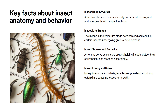Adult insects have three main body parts: head, thorax, and abdomen. The nymph is the immature stage between egg and adult in some insects. Antennae help insects sense their environment. Mosquitoes spread malaria, termites recycle dead wood, and caterpillars eat leaves to grow.